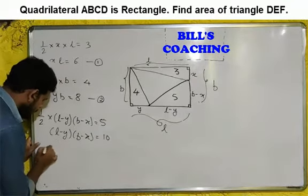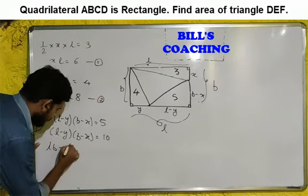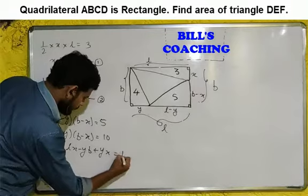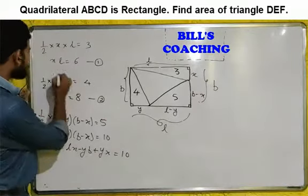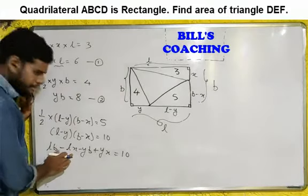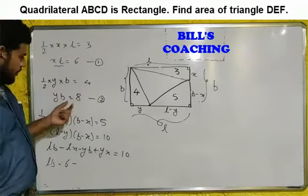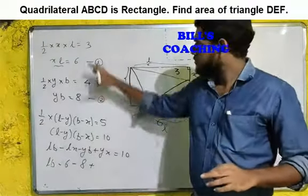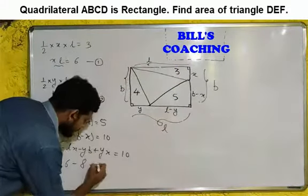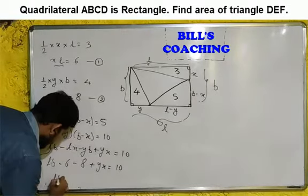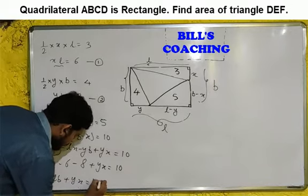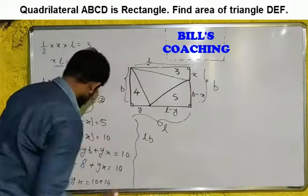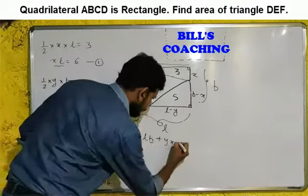Expanding this bracket gives us LB minus LX minus YB plus YX equals 10. Now substituting XL equals 6 and YB equals 8: LB minus 6 minus 8 plus YX equals 10. Rearranging, LB plus YX equals 24.